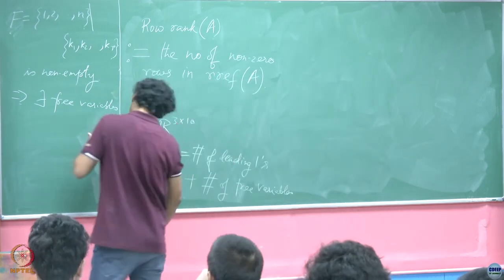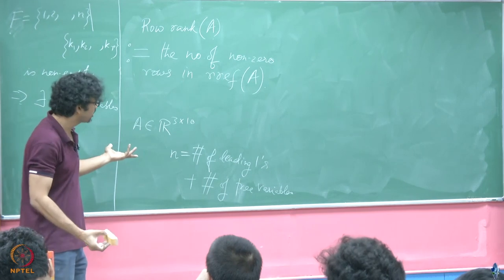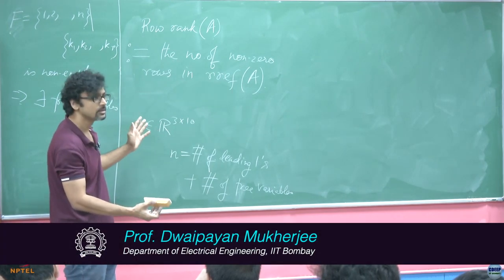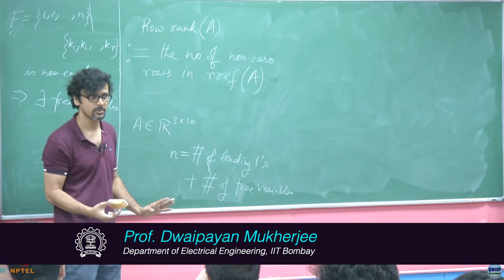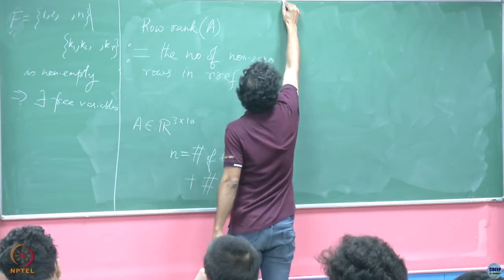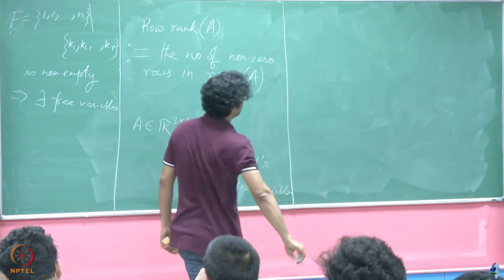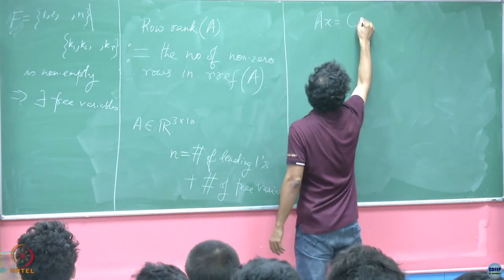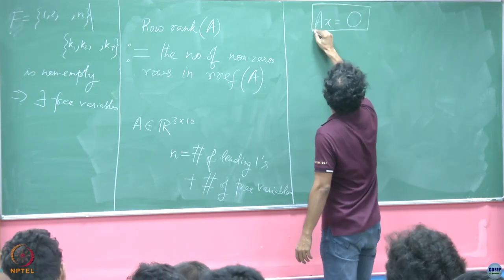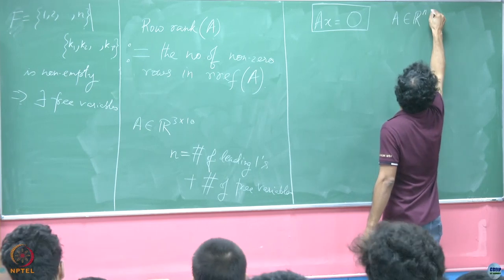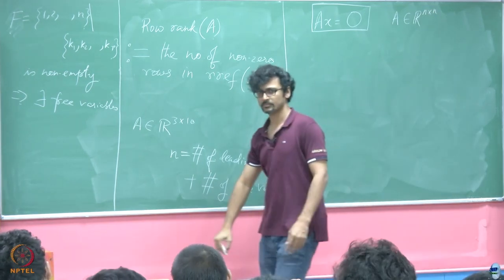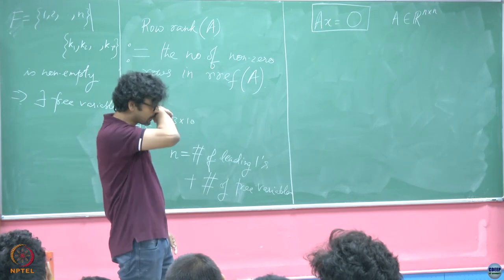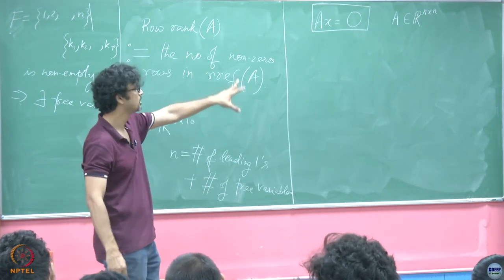Now that we have got this clear for a general matrix — it is rectangular — we talked about a fat matrix and shown that you will always have a non-zero solution. Let us now turn our attention towards square matrices and see what we can say. So Ax = 0 is still the equation in focus, but now A is a square matrix. We will get back to the rectangular case once we have covered this, because there are a couple of interesting and important observations to be made for the square case.